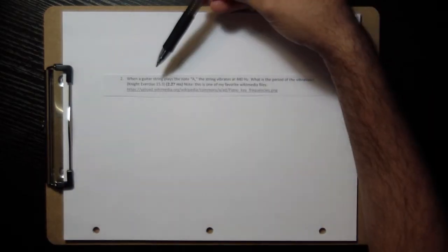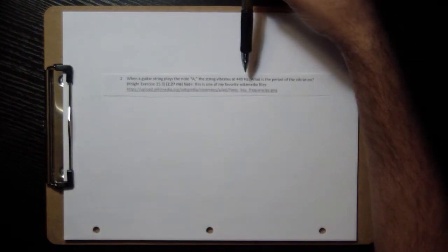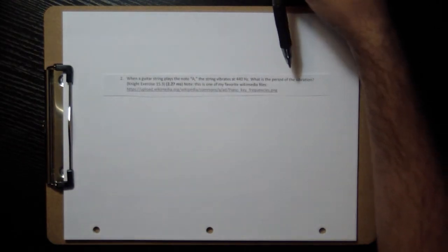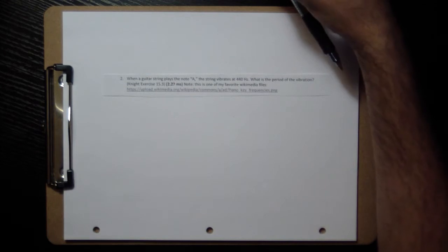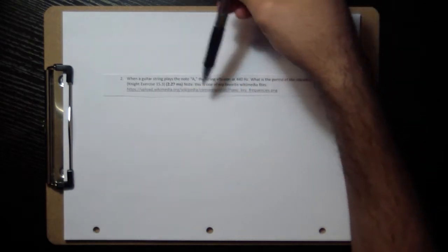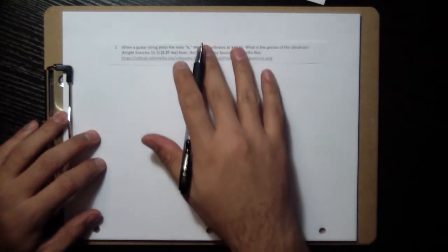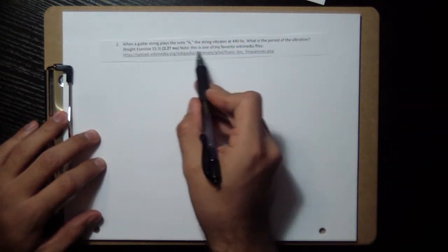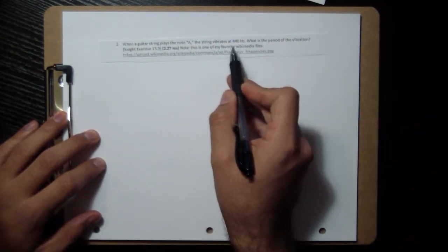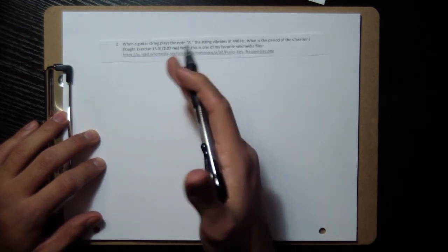Let's read number two: when a guitar string plays a note A, the string vibrates at 440 Hertz. What is the period of the vibration? There's a link to a file that has all different notes. This first sentence tells you the frequency at which a string is going to vibrate to play the note A.